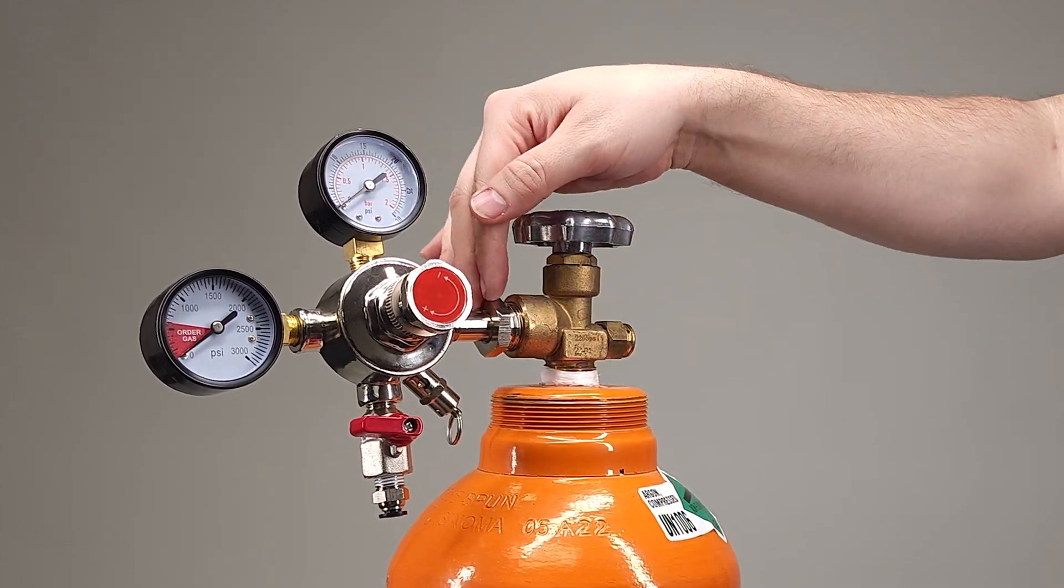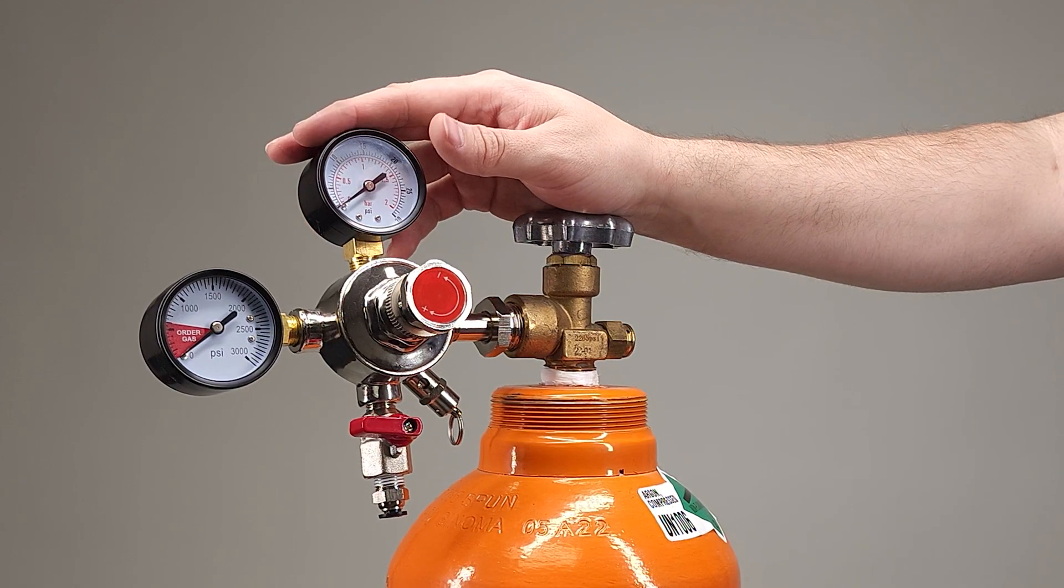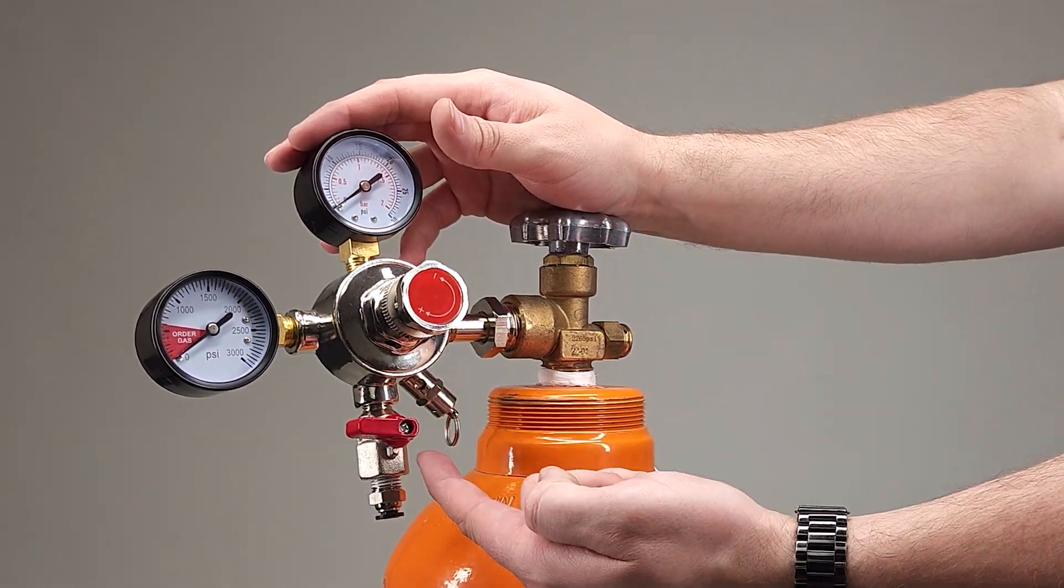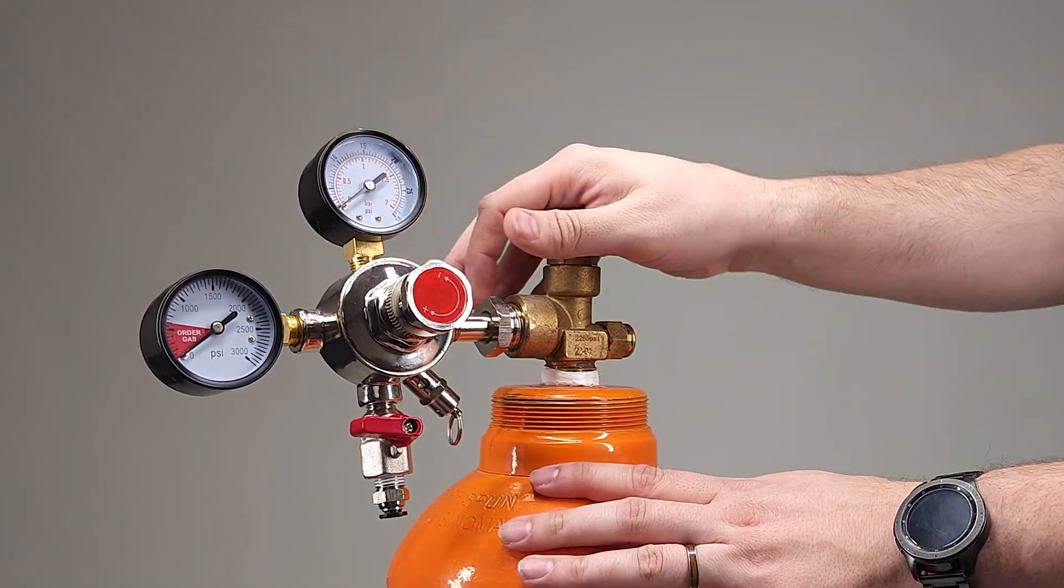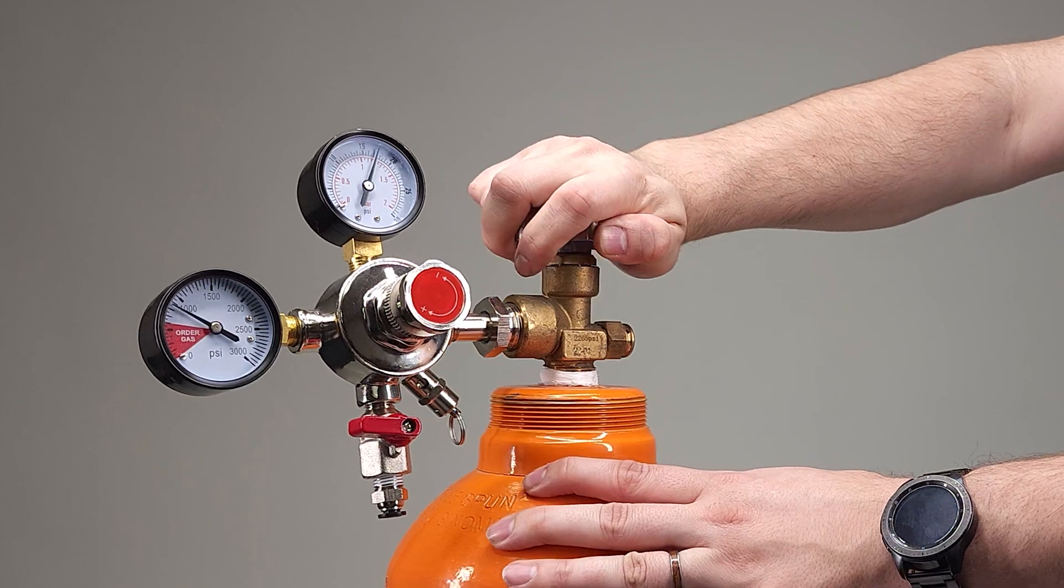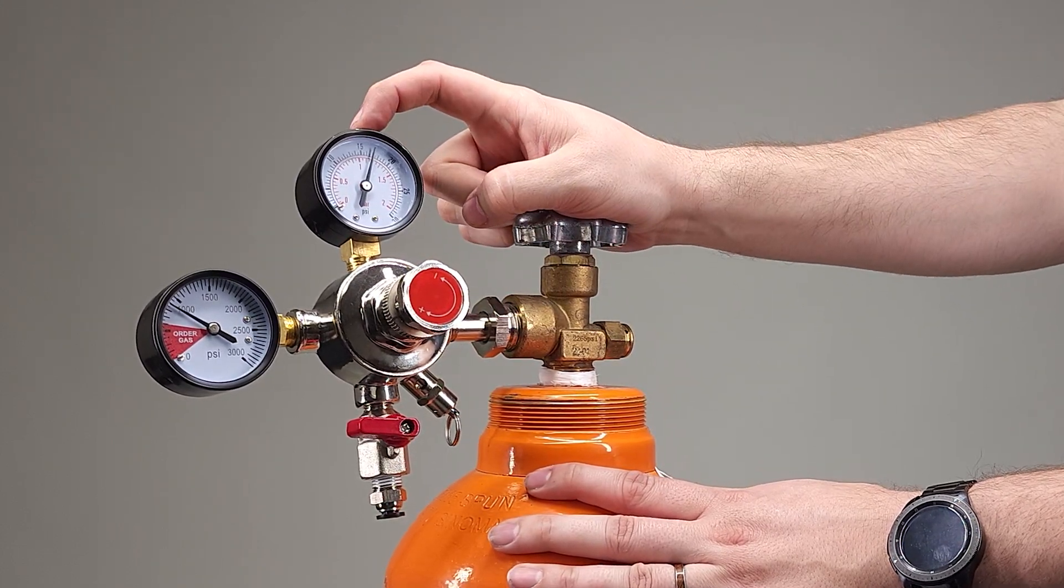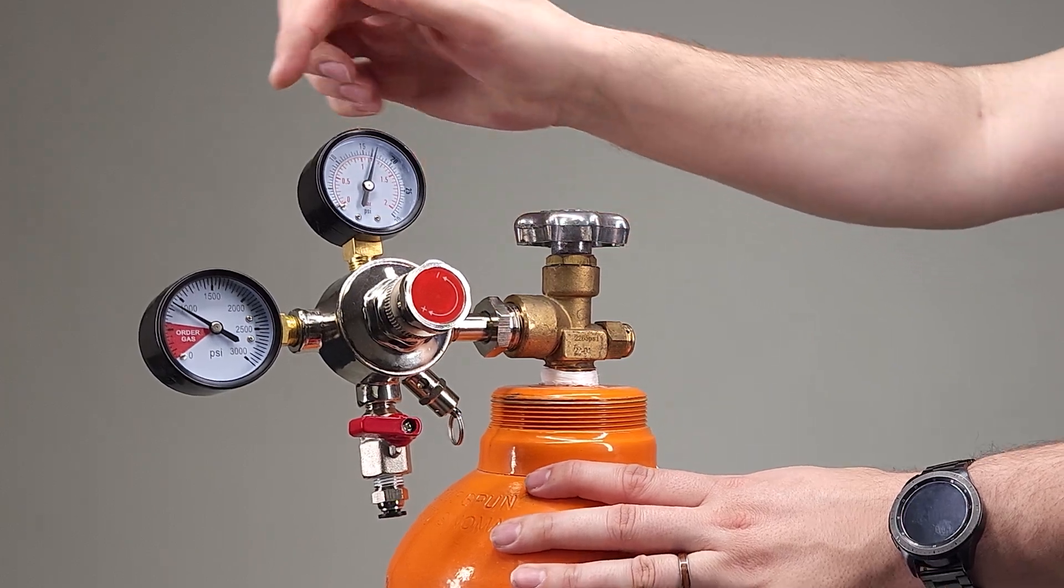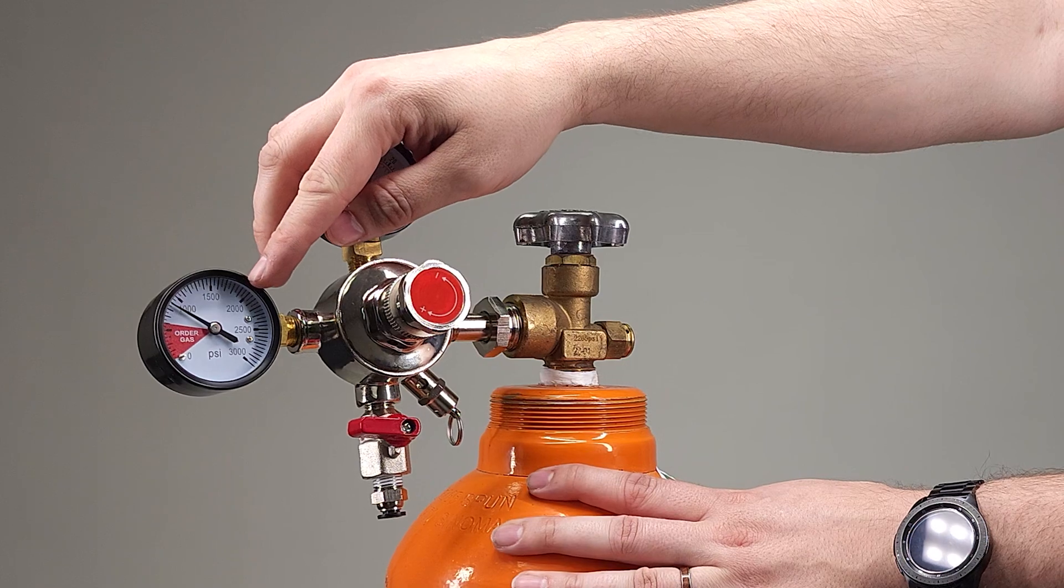And because this is loose, we can angle the regulator however we please. So with this valve turned perpendicular to the flow direction, we can now turn this on. So now we can see what's going to be leaving in psi and what we have in the tank. A full tank is going to be at 2000 psi.